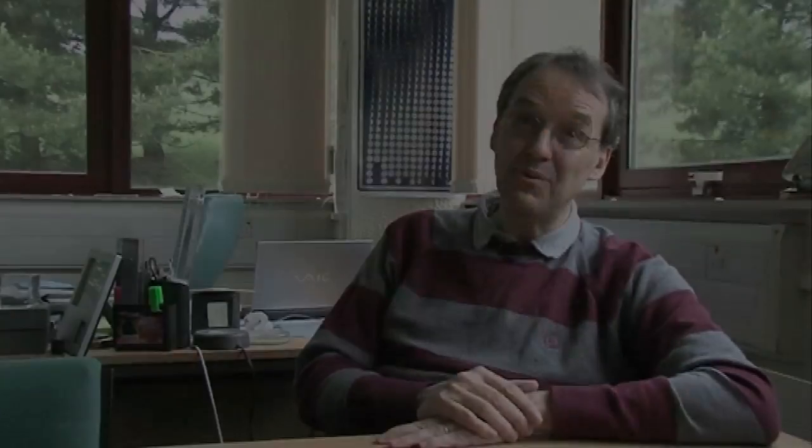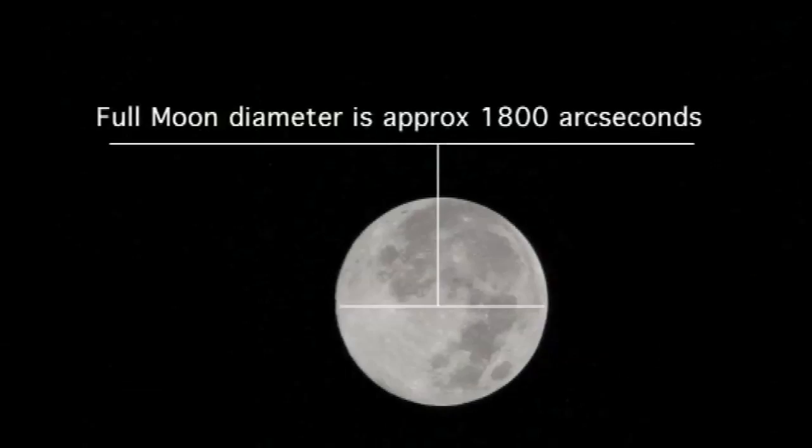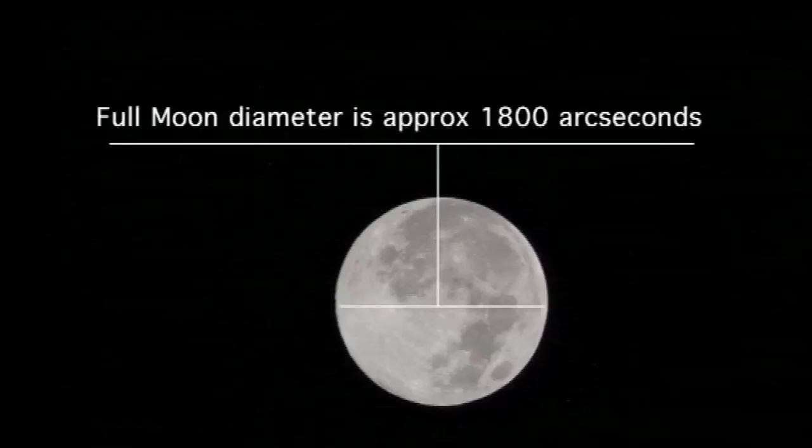So an arc second is one three-thousand-six-hundredth of a degree, which is itself one three-hundred-and-sixtieth of a circle — which basically means it's a very, very small angle. So that's the angle side of it, the arc second side of it.